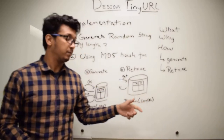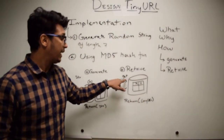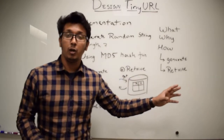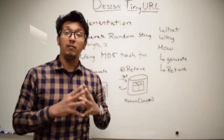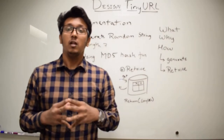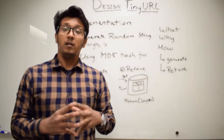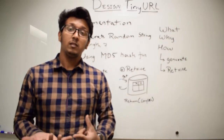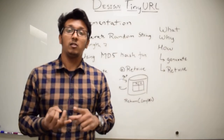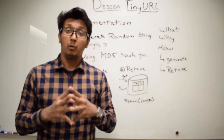The retrieve function is fairly simple — we just get the key-value pair from the database and return the long URL, which is the value, to the user. However, why are we not using the random method? Because it cannot be scaled — thousands of users cannot use this system at a single point in time due to key collision when inserting into the database.